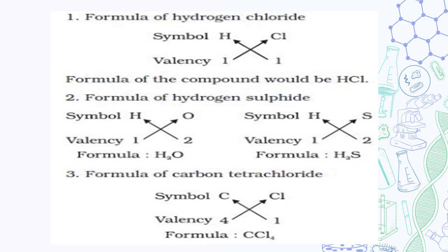Let us see a few examples. Formula for hydrogen chloride. Symbol of hydrogen is H and symbol of chlorine is Cl. Valency of hydrogen is 1 and valency of chlorine is 1. Therefore, when we crisscross the valencies, the formula becomes HCl. H is positive ion, that is cation, and Cl is negative ion. So we followed the three rules.